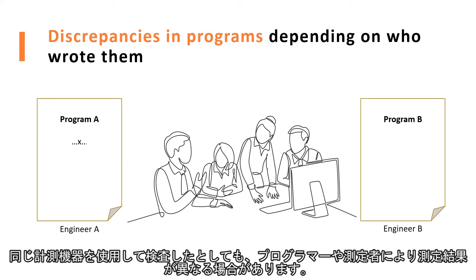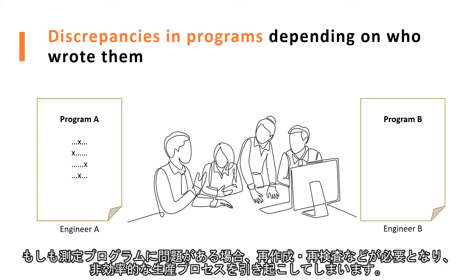Measurement results may vary even when inspections are made using similar equipment. The variation in measurement programs may cause the need for extra procedures such as re-inspections, resulting in an inefficient production process.